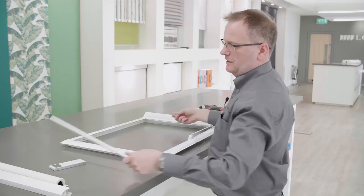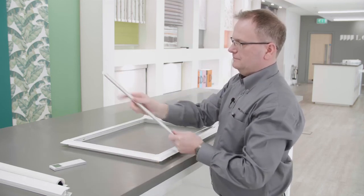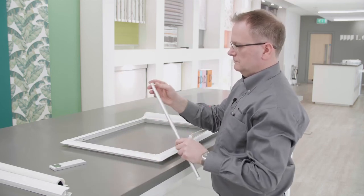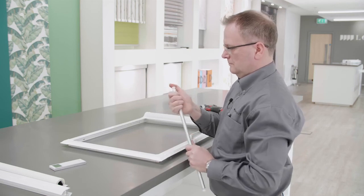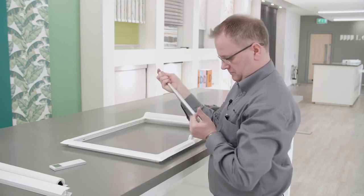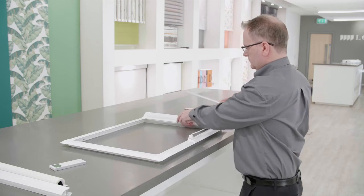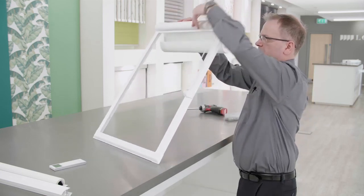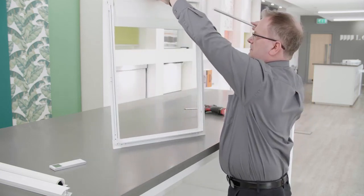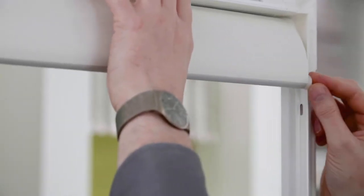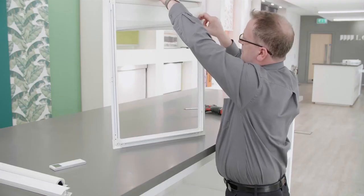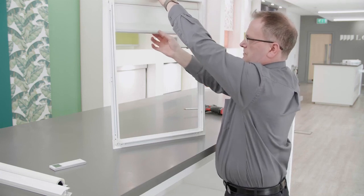Take the bottom bar and put in the bottom bar end caps. Slide the bottom bar into the fabric and locate in the grooves on the side channels.